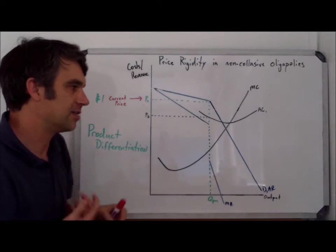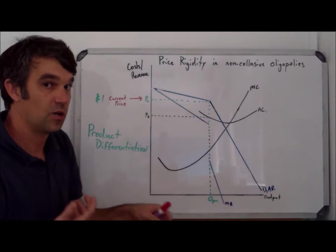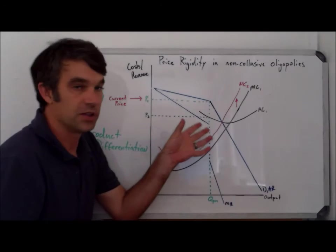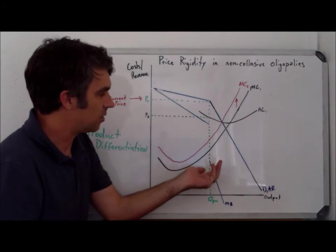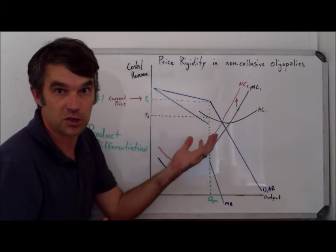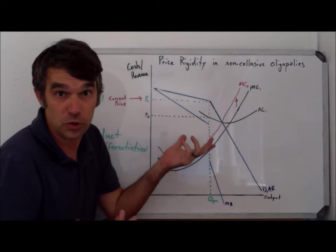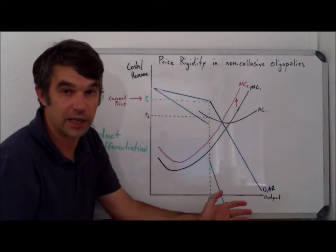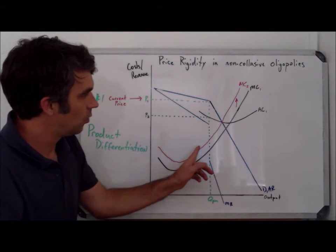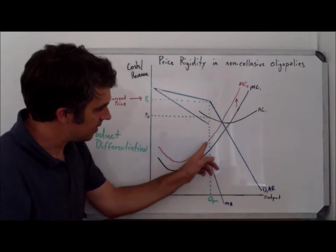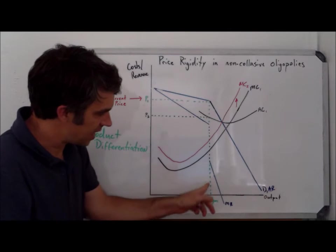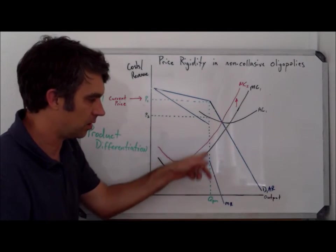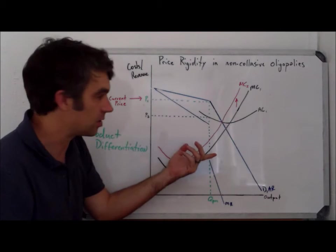Well, now what we want to see is if marginal costs change, what's going to happen to the non-collusive oligopoly. So this firm, Coke, is now facing increased marginal costs. Maybe the price of fuel has gone up. Maybe they have to pay their workers a little bit more money. What we see is that MC and MR, they still intersect at the same place because this is occurring on this vertical portion of the marginal revenue curve.